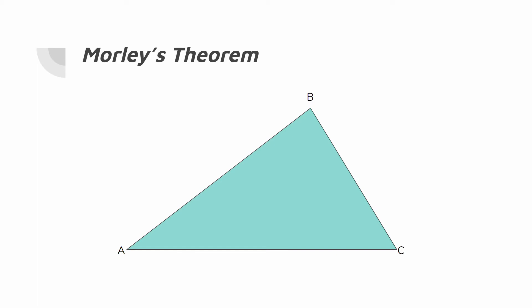Let there be a triangle ABC. Draw the two trisectors from angle A. Now draw the closest trisectors on both angle B and C to intersect with angle A's trisectors. Draw the final two trisectors until they intersect. There should be three points.